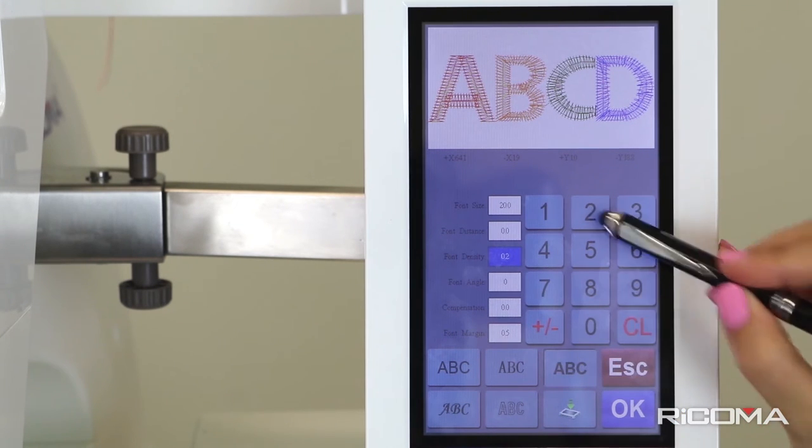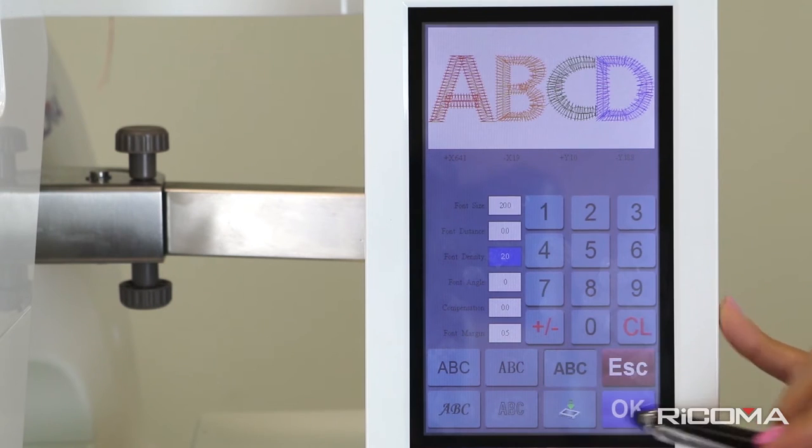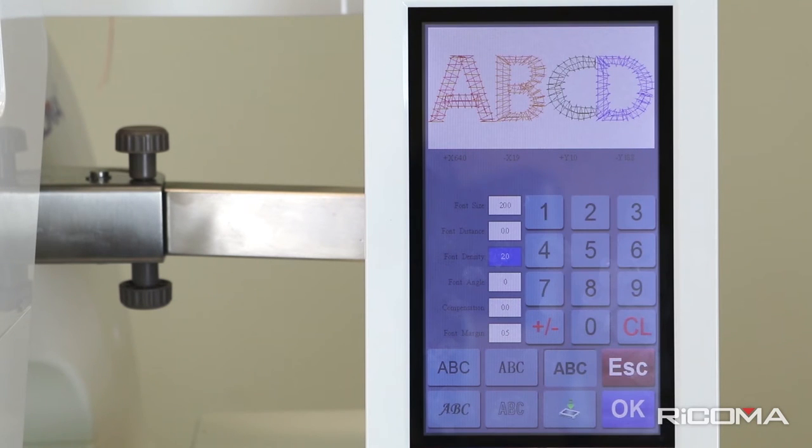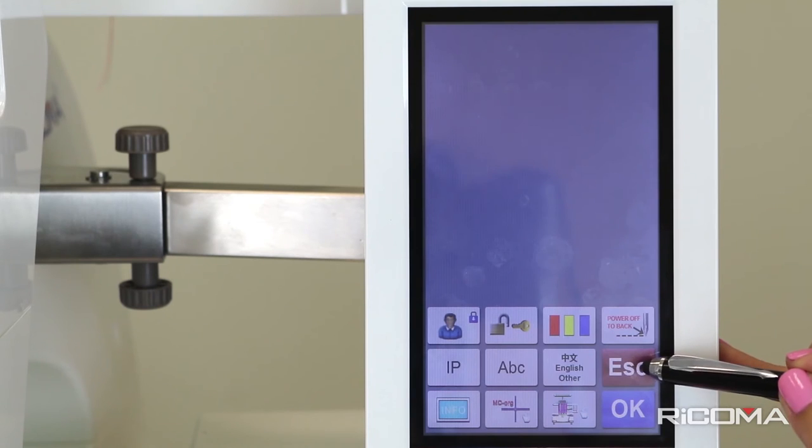Once you are happy with the outcome, import the design to the machine by pressing on the Import to Screen key to the left of the OK button. Click on the Escape button three times to navigate back to the main screen.